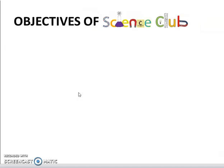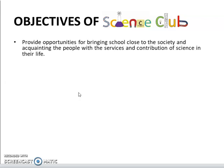Now let us have a look at objectives of Science Club. Why do we need to have a Science Club in a school or in a college? It provides opportunities for bringing school close to the society and acquainting the people with the services and contribution of science in their lives. So it basically tells people why science is so important and how it contributes in their life so that they appreciate its presence.